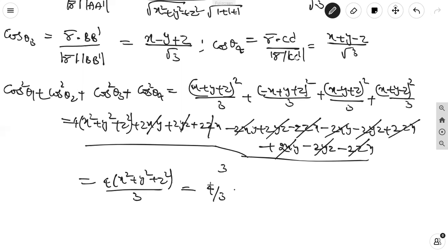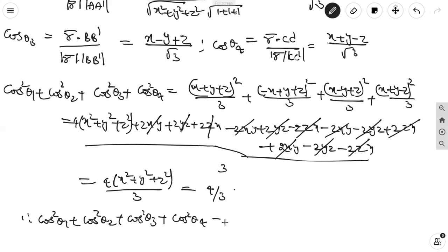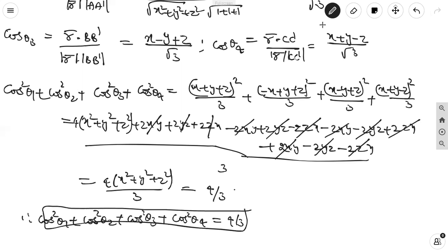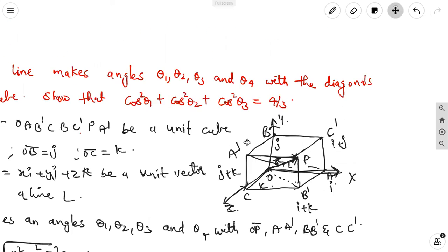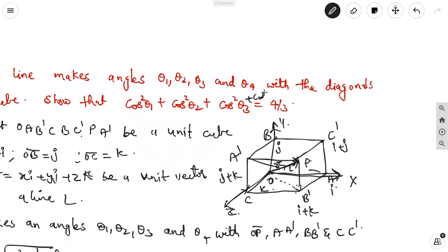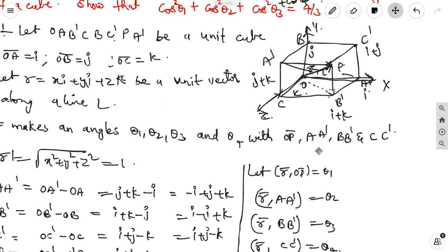In the question you can correct it: cos²θ₄ should be added. Therefore cos²θ₁ + cos²θ₂ + cos²θ₃ + cos²θ₄ = 4/3. From this relation only we are getting 4/3. In the question, you can correct it — only taking up to 3 gives the wrong result; you must add cos²θ₄ to get 4/3.